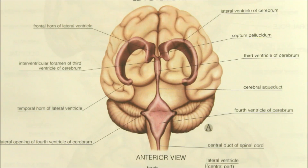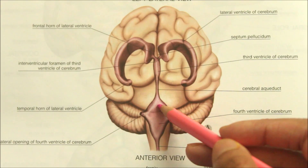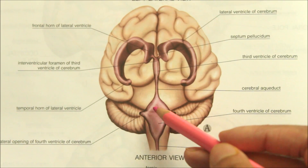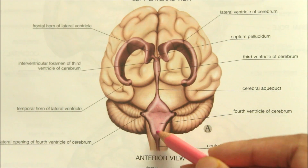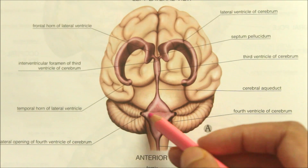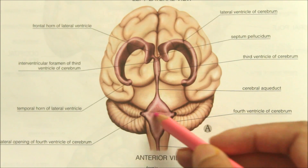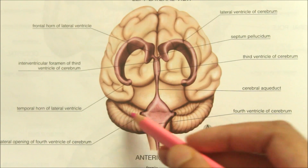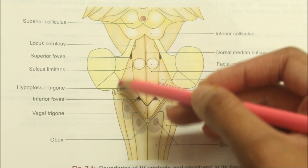The floor is divisible into an upper triangular part formed by the dorsal surface of the pons, a lower triangular part formed by the dorsal surface of the medulla, and an intermediate part at the junction of the pons and the medulla. This intermediate part is prolonged laterally over the inferior cerebellar peduncle.